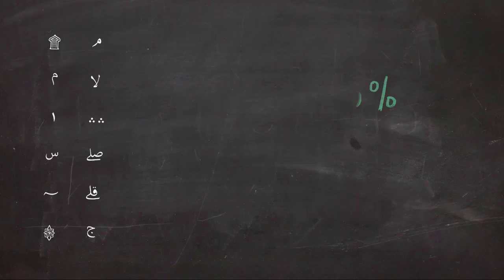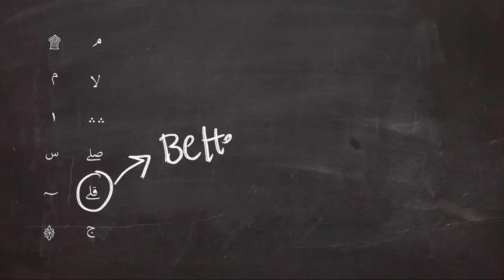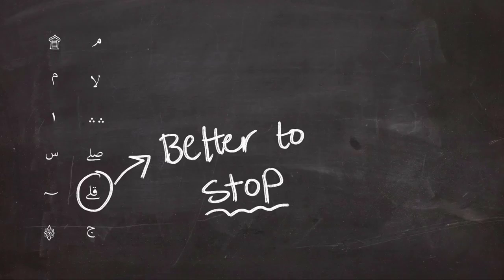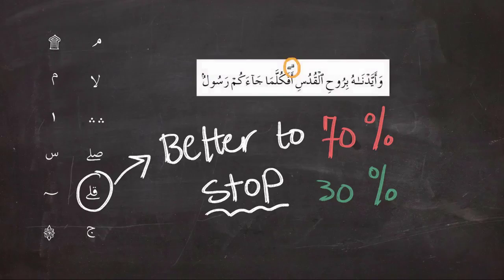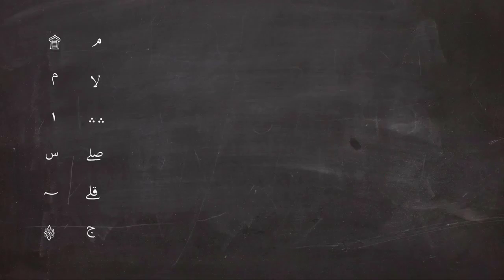Next is the symbol of Qil, which is the exact opposite of Sil. It means it's better to stop—70% stop, 30% go. So it's better to stop at the sign.